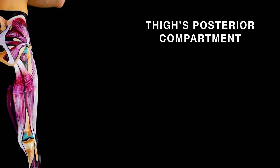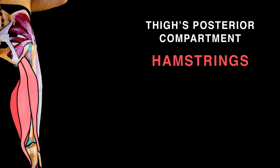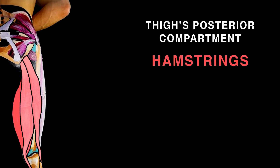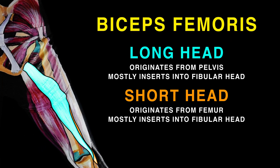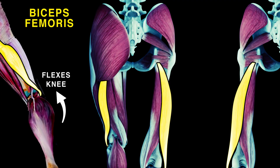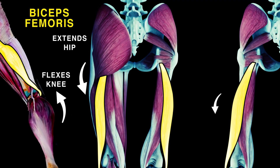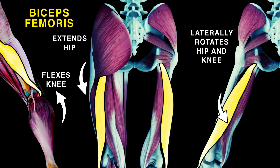Now the thigh's posterior compartment — the hamstrings. These include biceps femoris, semitendinosus, and semimembranosus. Biceps femoris has short and long heads which share a common tendon. It flexes the knee, extends the hip, and laterally rotates the hip and knee.